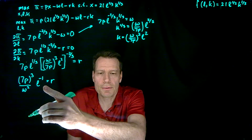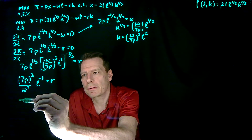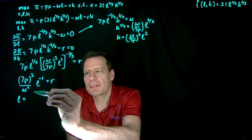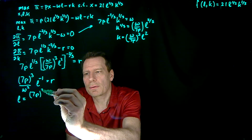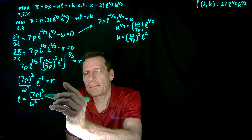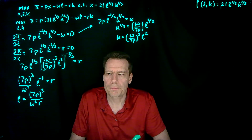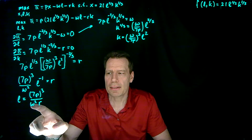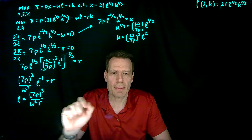We want to get L to one side. L to the minus one is just one over L, so we multiply both sides by L, and then divide both sides by R. That gives us L equals 7P to the third divided by W squared times R. This tells us how much labor we're going to hire for any output price and set of input prices — that's our labor demand function.